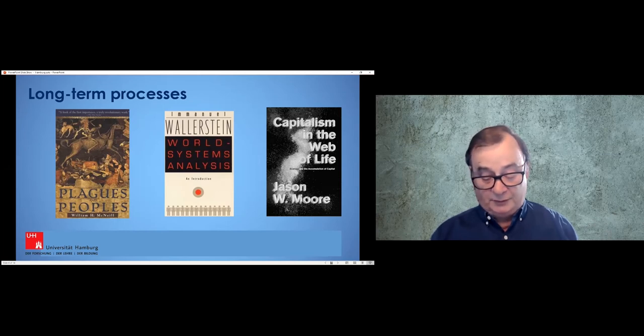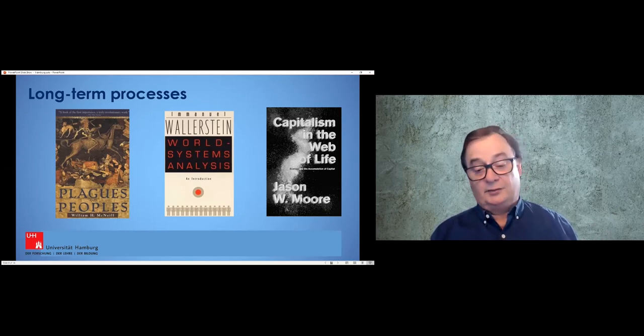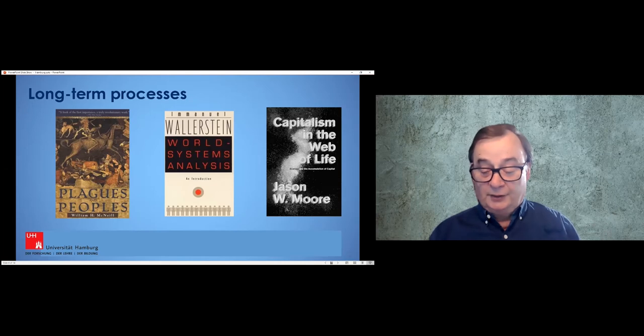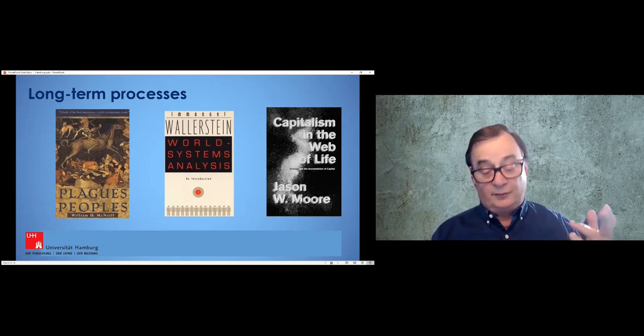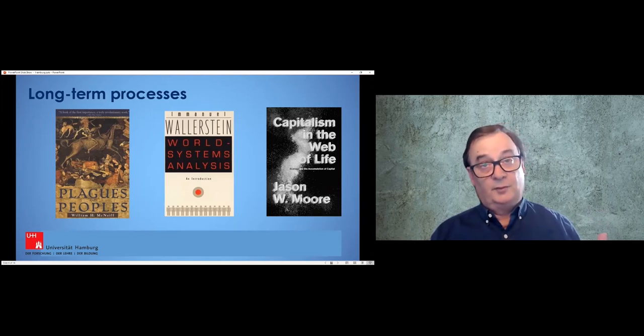This is not simply a matter of learning from history in a sense of noting the similarities between how previous environmental problems like plague, natural disasters, climate change or famines were managed and how we're dealing with similar problems today. A historically informed approach means something more complicated. It should include an analysis of the place that such environmental problems occupied in relation to prevailing social relations and structures in different historical contexts. The aim should be to identify the conceptual implications of both the similarities and the differences, and this will lead us to direct greater attention to aspects of the social context of sustainability issues that might otherwise remain in the background.